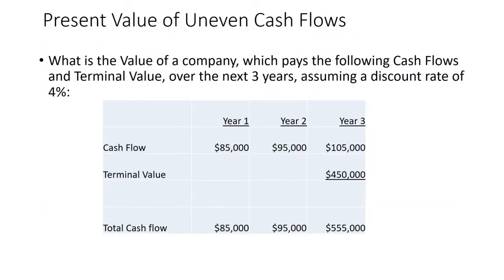Let's get to uneven cash flows — you might see this if you're valuing a company in a discounted cash flow model. A company in the first year throws off $85,000 in cash, the second year $95,000, the third year $105,000. There's also a terminal value — you're going to sell this company at the end of three years. So your total cash flow stream is $85,000, $95,000, and $555,000.